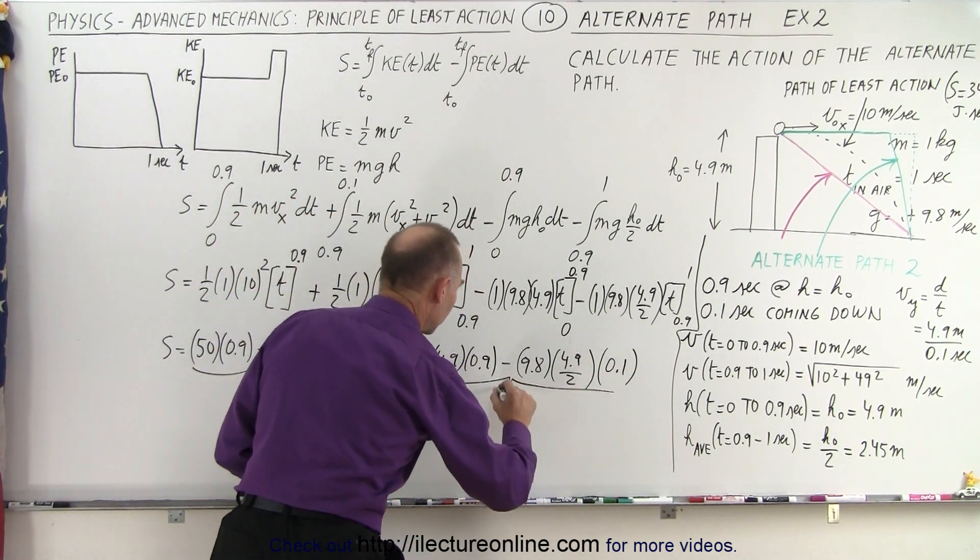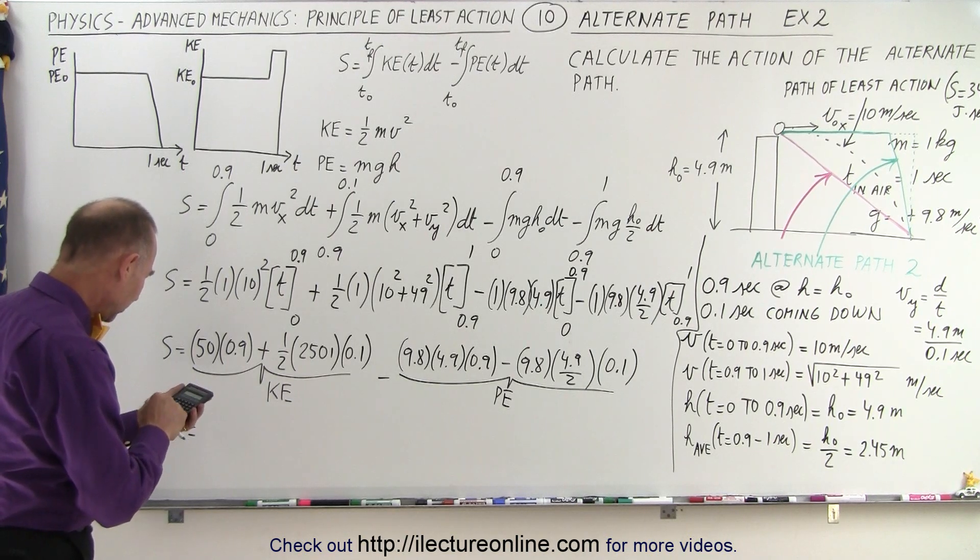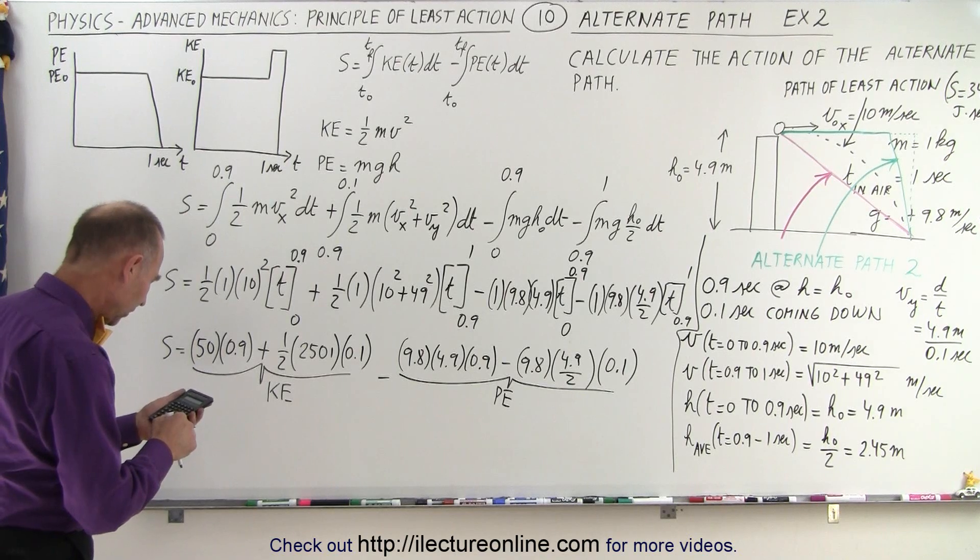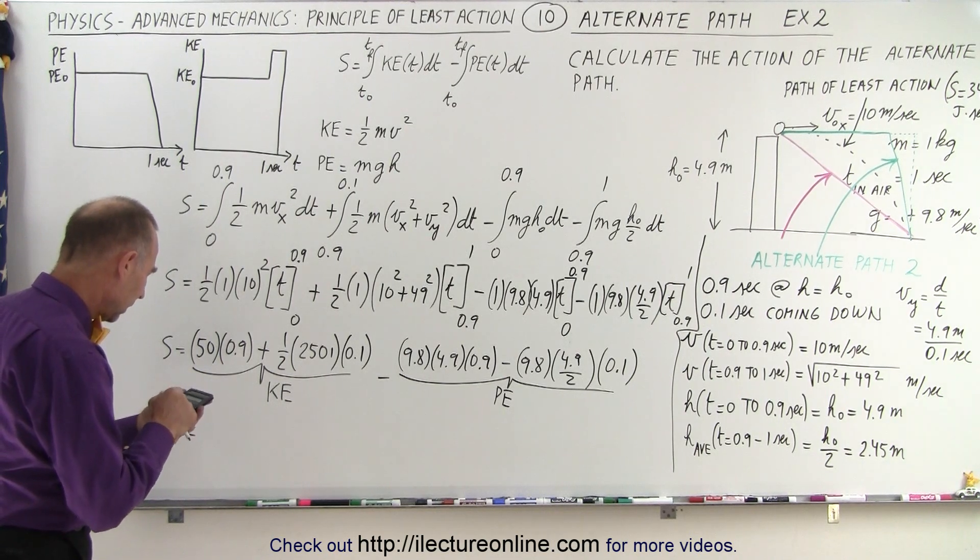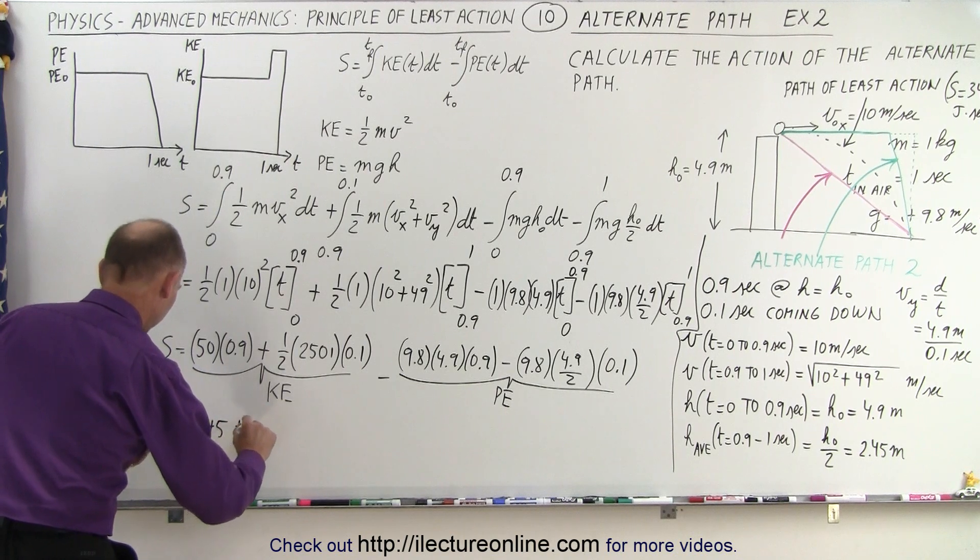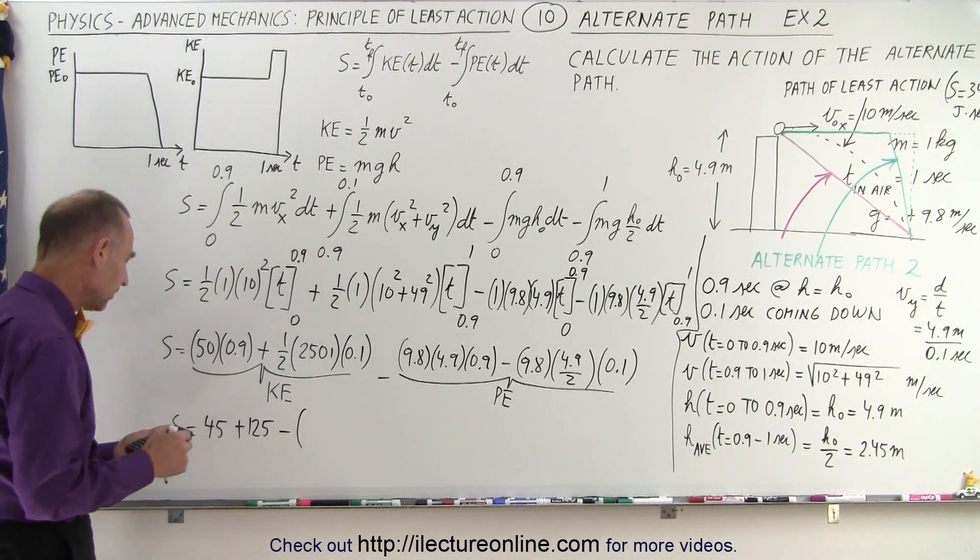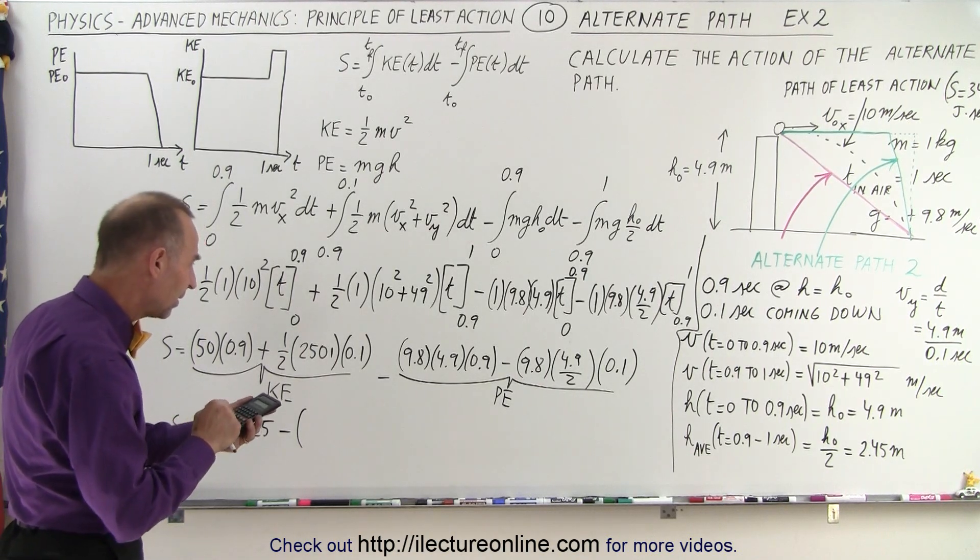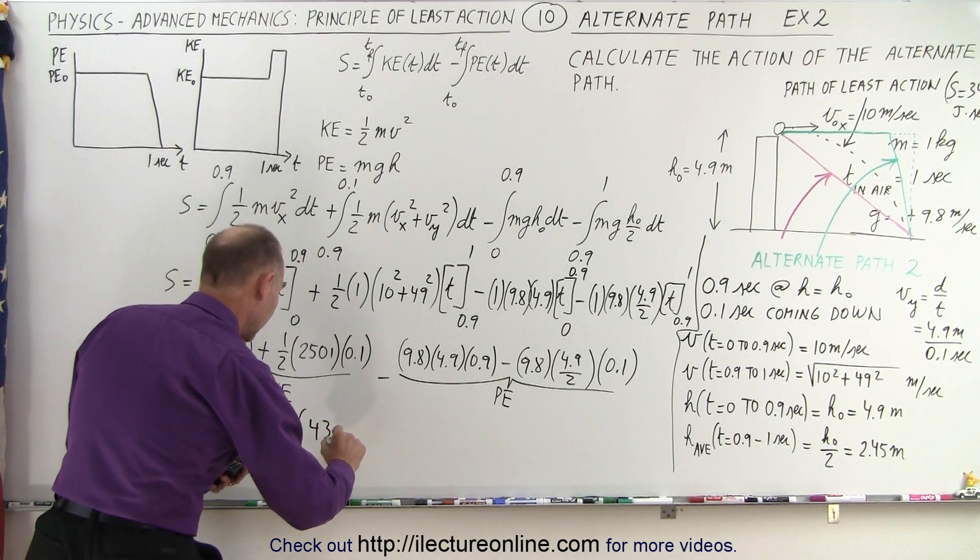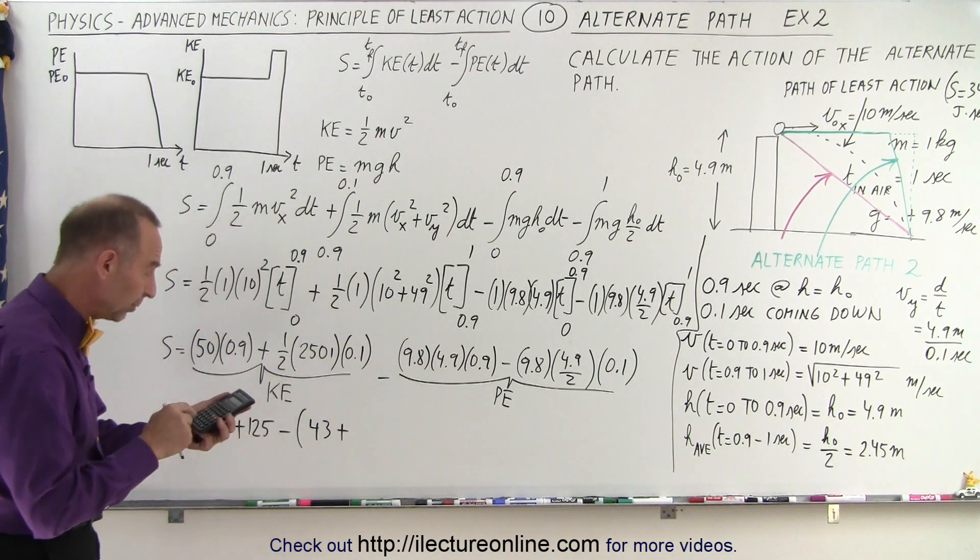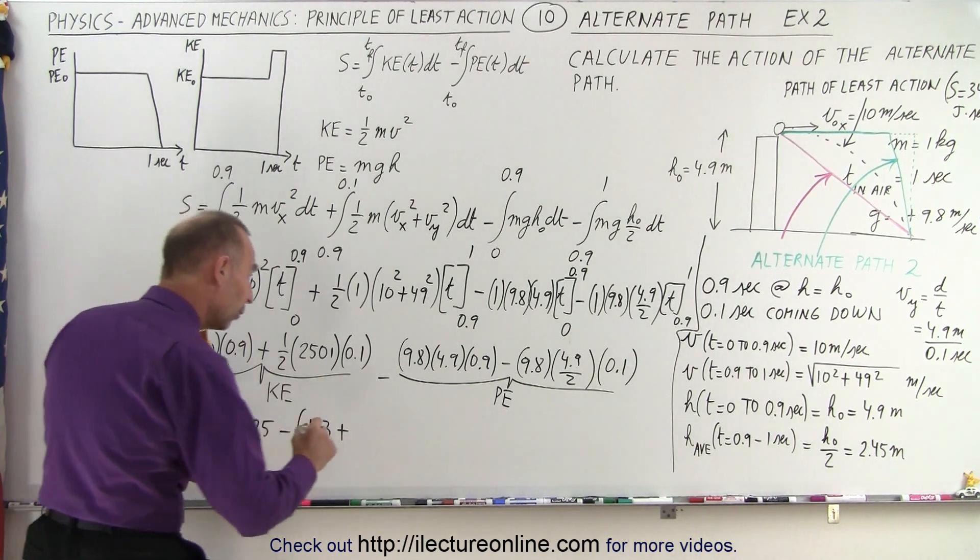And these two terms are the potential energy terms. So what do we get? S equals, so we get 50 times 0.9, that's 45, plus 0.5 times 0.1 times 2501, that would be 125. So we have 45 plus 125 minus, so that gives us 170, and minus this. So we have 9.8 times 4.9 times 0.9 equals, that gives us 43. And then plus, because I have the negative in front, so let's see what that is equal to. So we have 9.8 times 4.9 divided by 2 times 0.1 equals, that's 2.4.